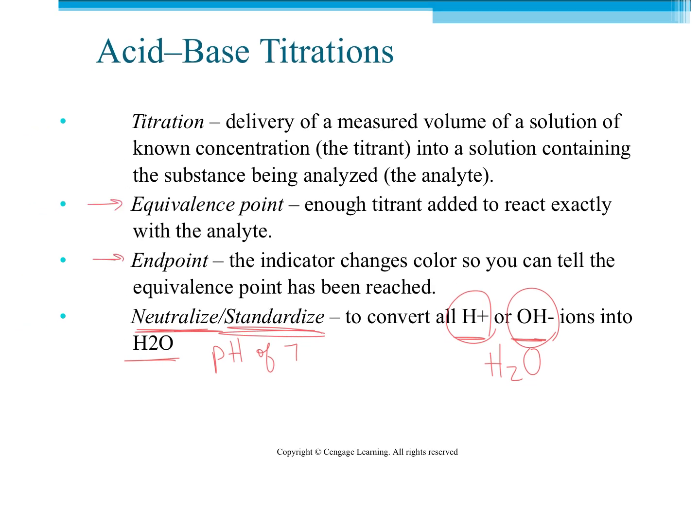These two definitions right here, equivalence point and endpoint. Equivalence point is if we've reached enough of our liquid to react exactly, to turn it neutral. That's going to make a little bit more sense when we actually do the lab. The endpoint is where the indicator changes color so you can tell the equivalence point has been reached. Let me give you a quick rundown of what might happen.